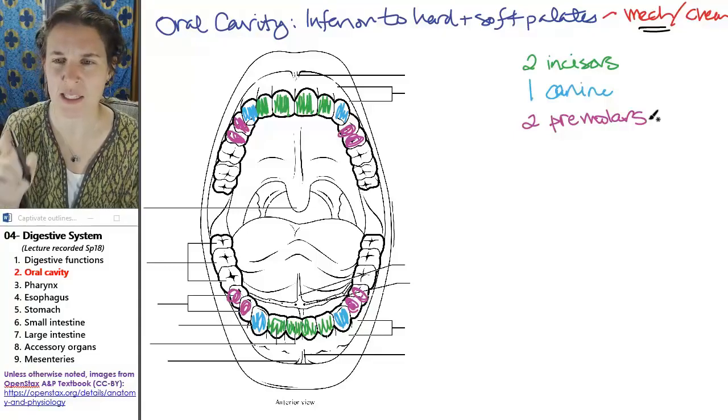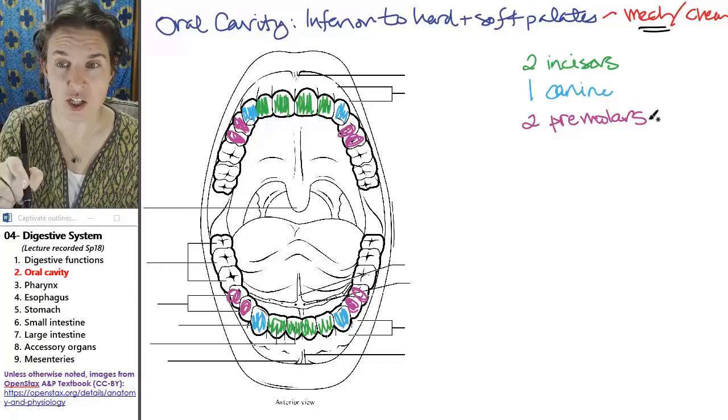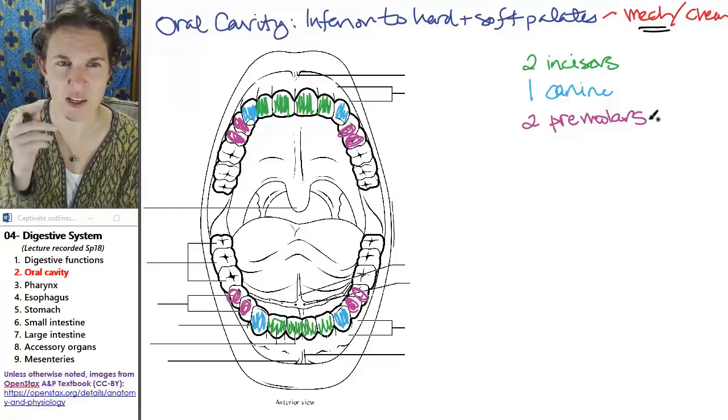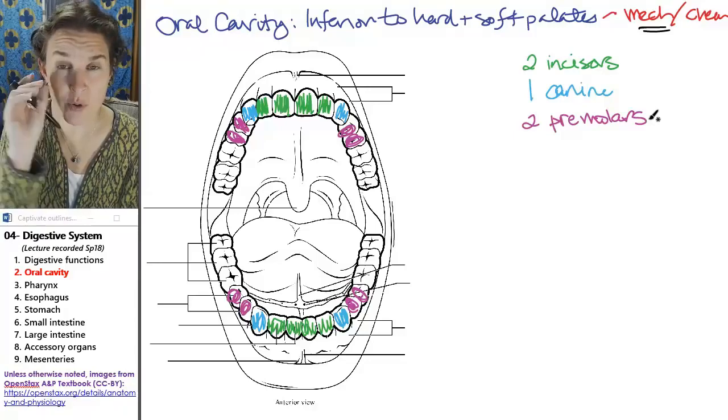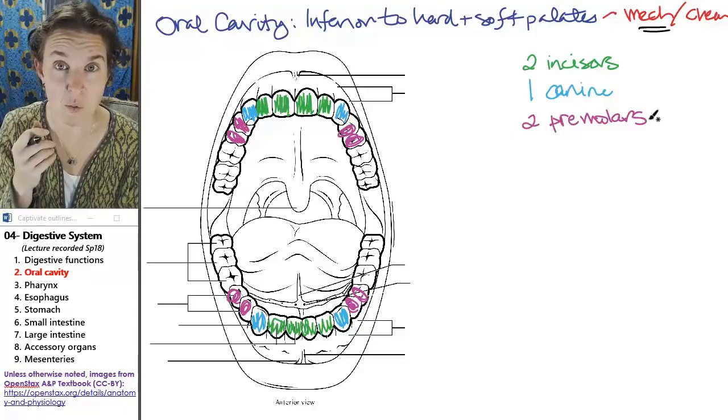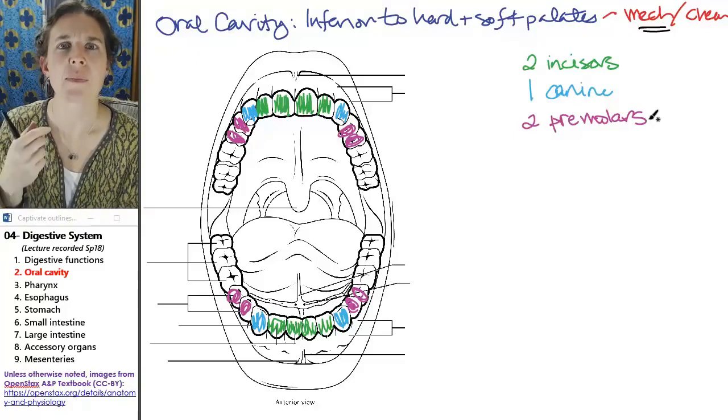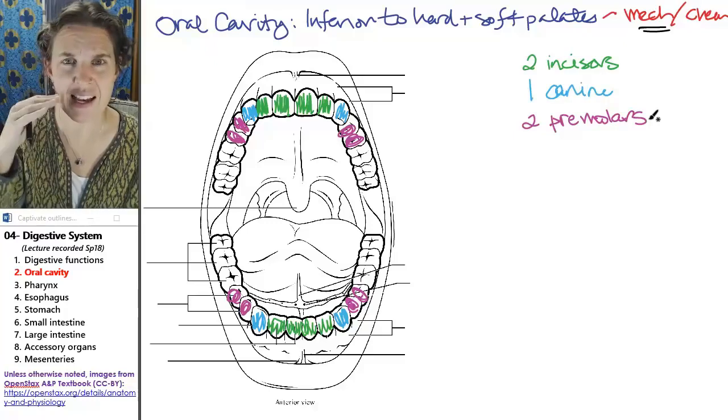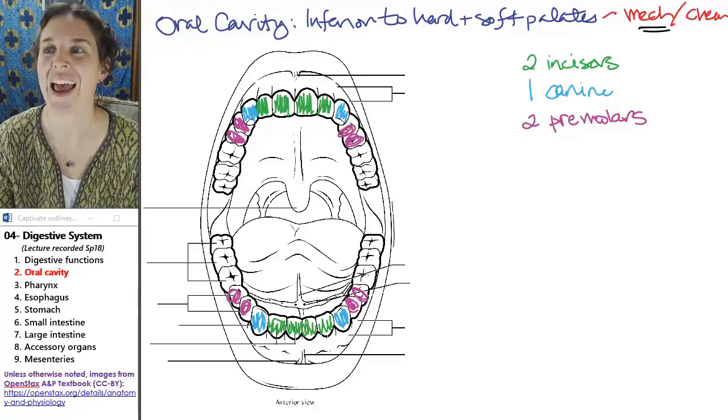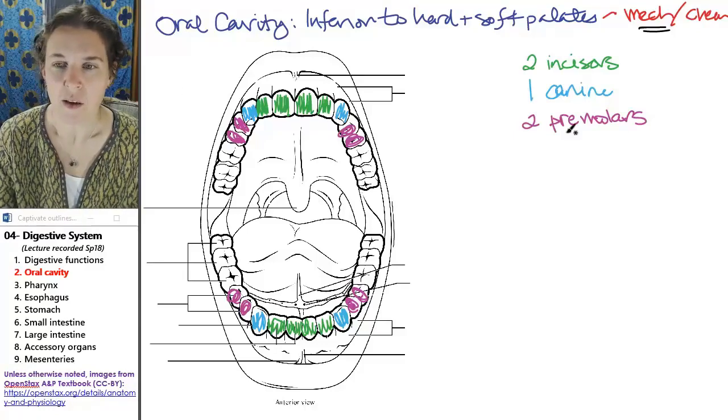And interestingly, those premolars are baby molars. I don't know if that makes sense. Because when you are a little slime, you actually have your baby teeth come in and the premolars that come in when you're a baby are considered baby molars. And then when they fall out, they grow back as these premolars.